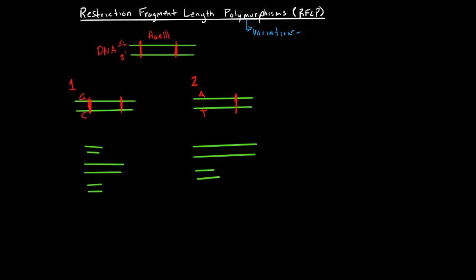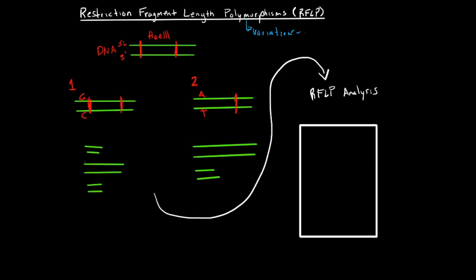And then after that we would do some sort of RFLP analysis. So let's bring this all the way around to right here. So this is the RFLP analysis and we would have, let's just do a box here. So we got running some gels here so that we would have son number one right here and son number two right here.